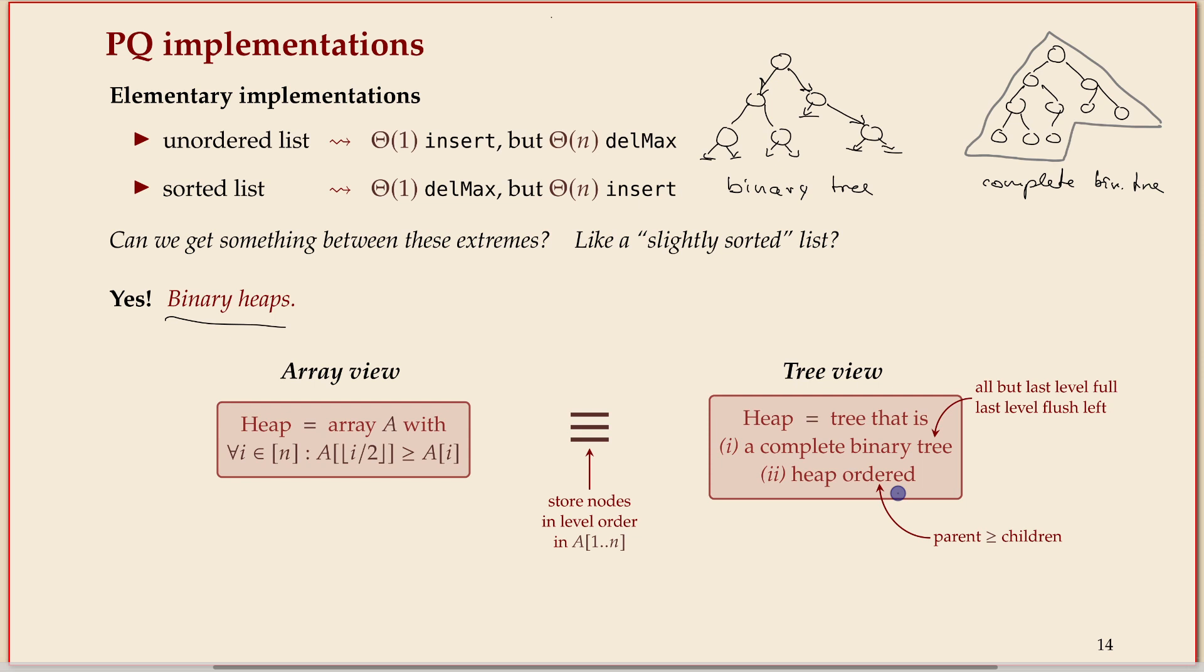The second thing we have to talk about is heap order and that's essentially what this encodes but in the tree it's much more natural. A heap order just means this: for every node the parent is larger than the children.